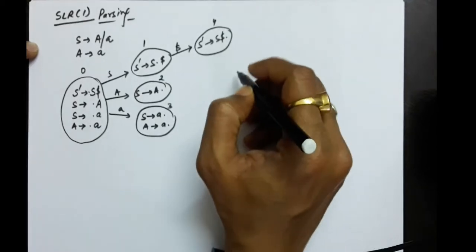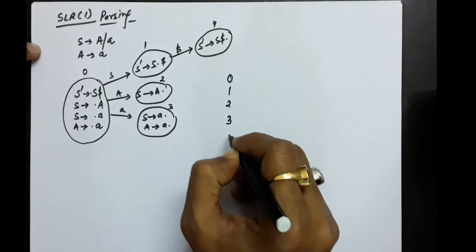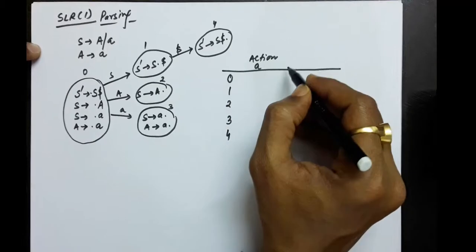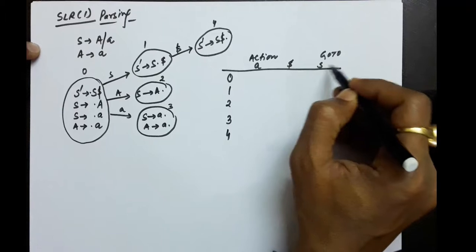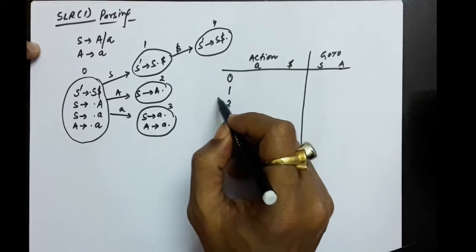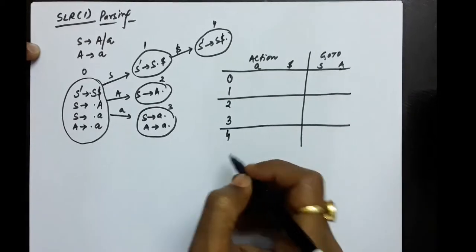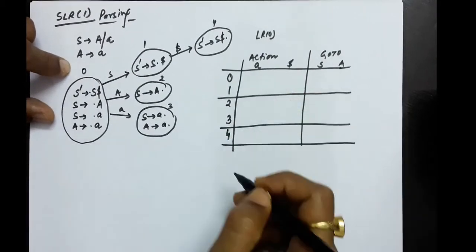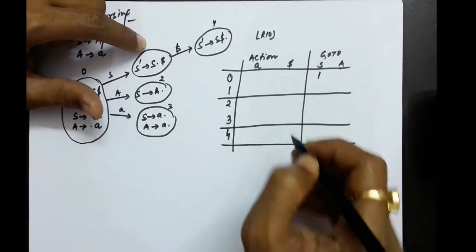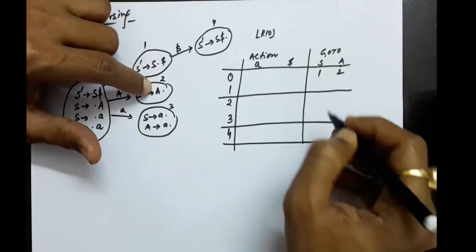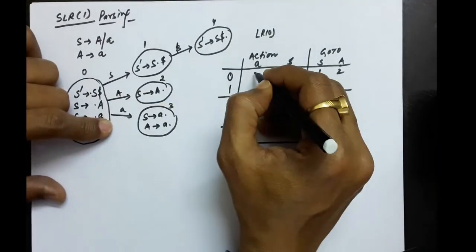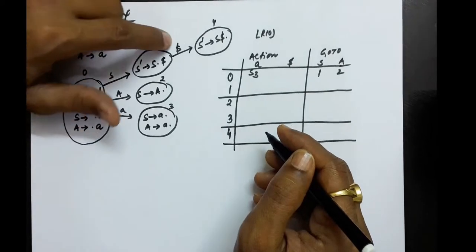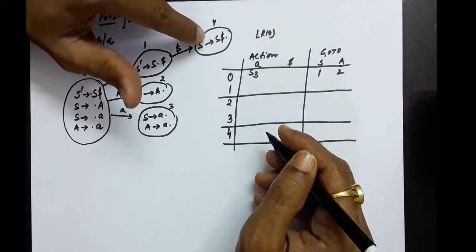Now we make the LR0 parsing table. The states are zero, one, two, three, and four. In the action part we have terminal symbol small a and dollar; in the goto part we have capital S and capital A. On state zero with capital S we go to one, with capital A we go to two, with small a we go to state three — written as S3. On state one with dollar, we go to the state with the start symbol followed by dollar.